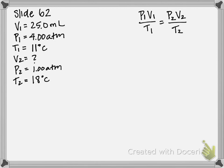So we have five of our six variables, we're looking for our V2. Now the only thing we have to be sure to do, just like with the other problems we've looked at, for our temperatures we've got to make sure and change them to Kelvin. So we're going to add 273 to each of these, which gives us 284 Kelvin for our T1, and for our T2 it's going to be 291 Kelvin.